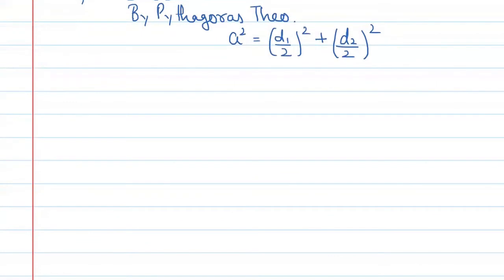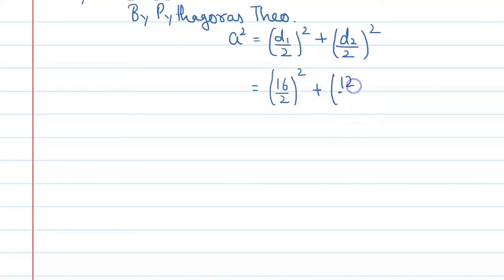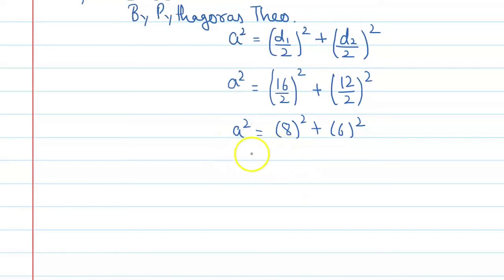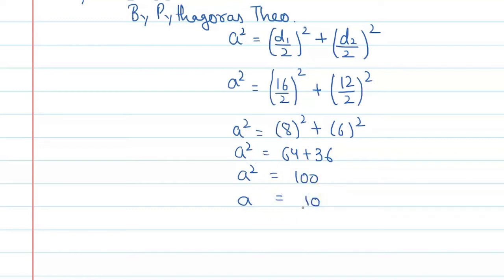Substituting the values: a² = (16/2)² + (12/2)² = 8² + 6² = 64 + 36 = 100. Taking the square root on both sides, a = 10. So the side of the rhombus is 10 centimeter.